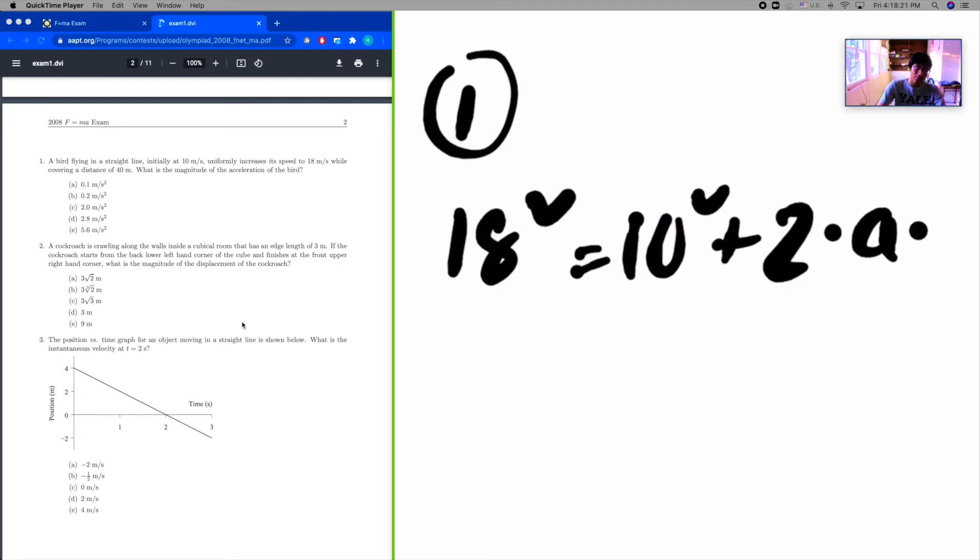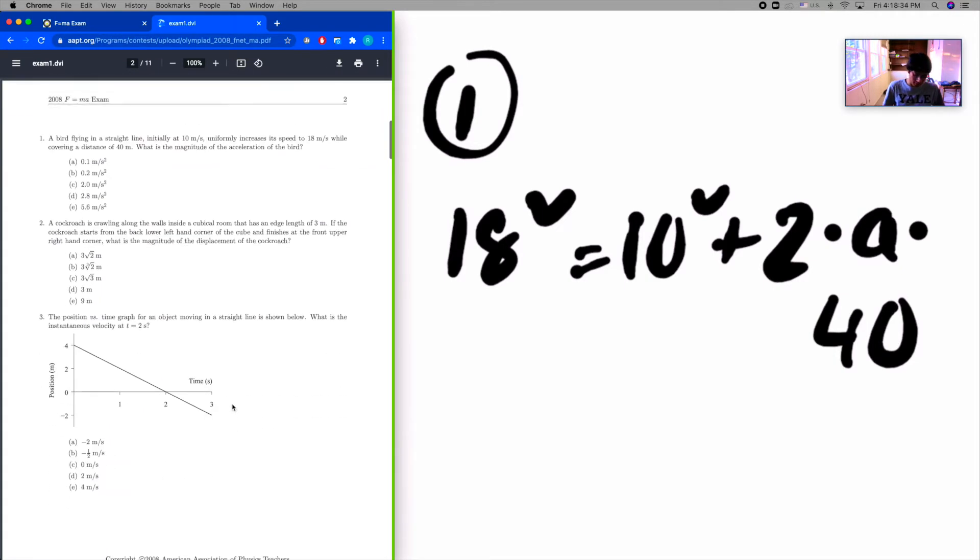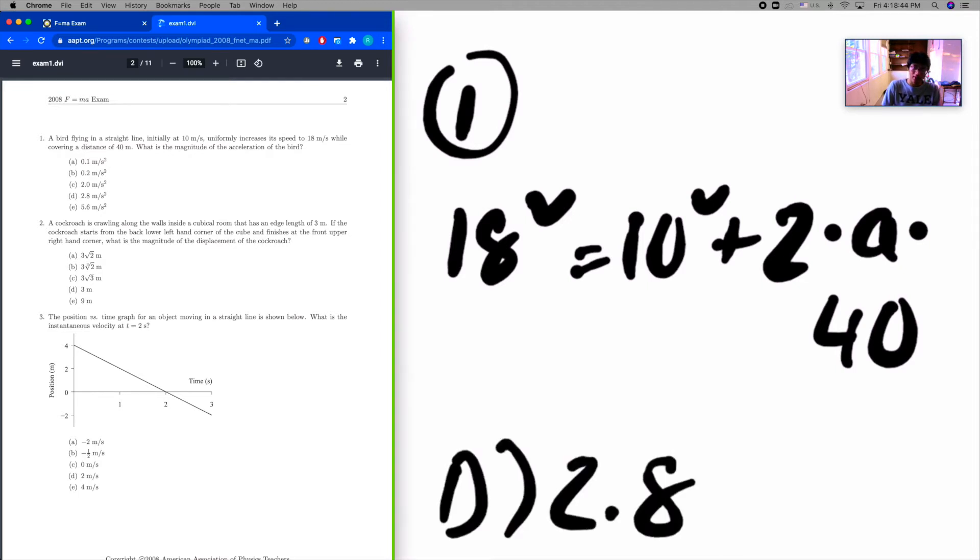We want to find acceleration and we know distance. So just solve for A. 18 squared... let me see if a handheld calculator may be used. Okay. So I'm going to do 18 squared minus 10 squared, 224 divided by 80 gives me 2.8. And that's going to be answer choice T. Alright, moving on to number 2.